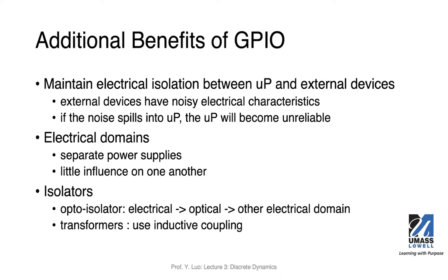The benefit of using GPIO is to maintain electrical isolation between the microcontroller and external devices. You may have the microcontroller connected to different external devices from different vendors, with different electrical characteristics. These devices may themselves generate noisy electrical signals. If such noise spills into the microcontroller, it will become unreliable, and your computation will produce incorrect or unreliable results, making it impossible to implement your state machines properly.